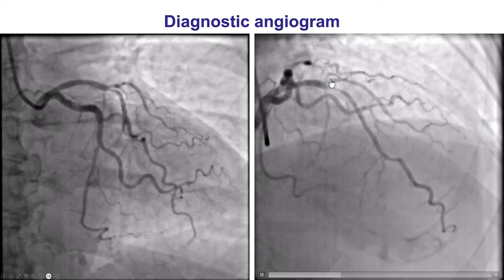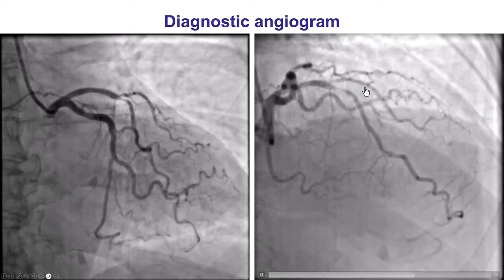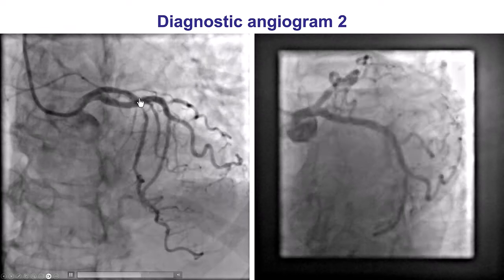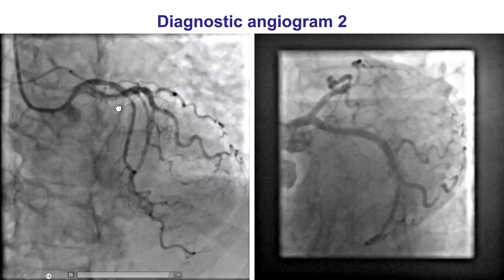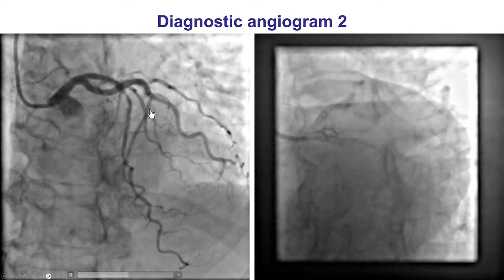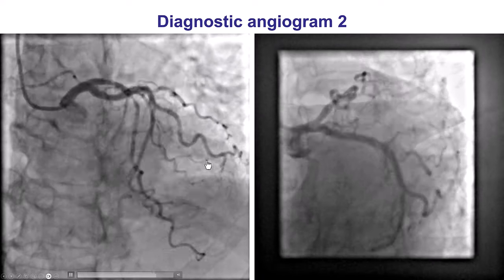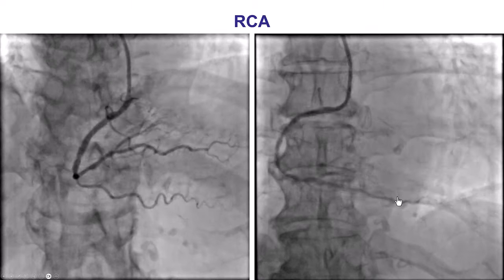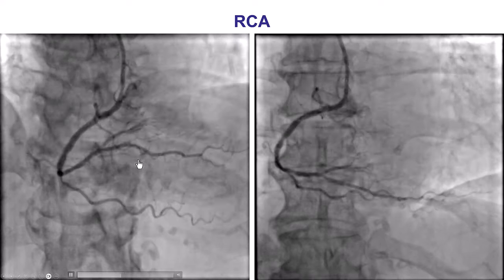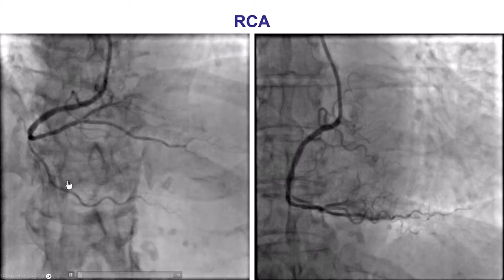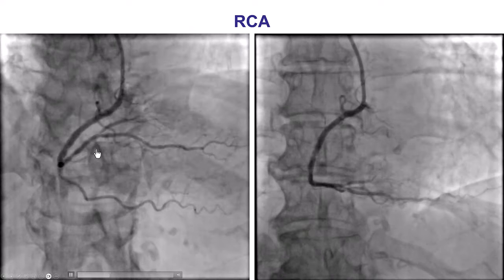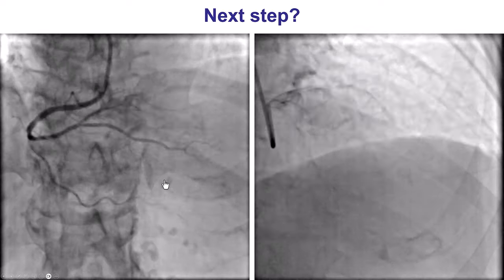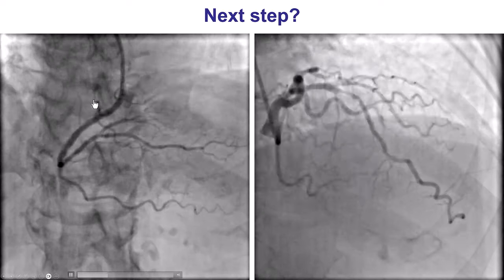However, there is some disease at the origin of the diagonal branch. In a different projection, again, we see disease in the LAD with some disease in the diagonal. The circumflex system is okay. In the RCA, there is also an intermediate lesion in the distal RCA at the ostium of the PDA. So, what to do next?